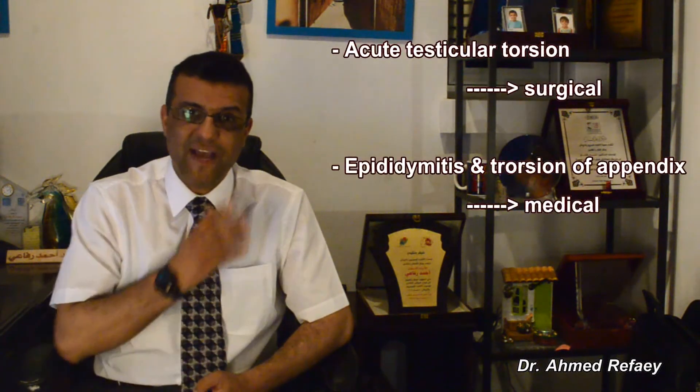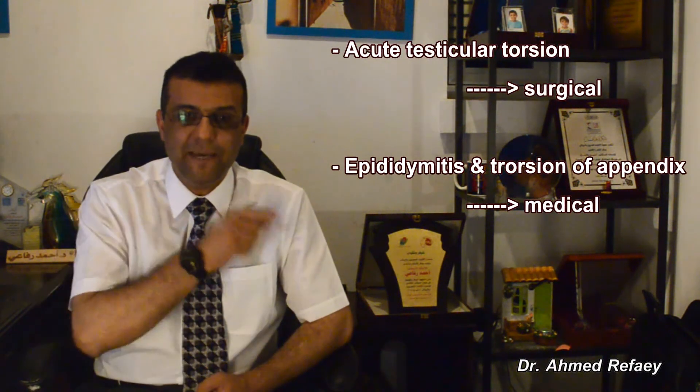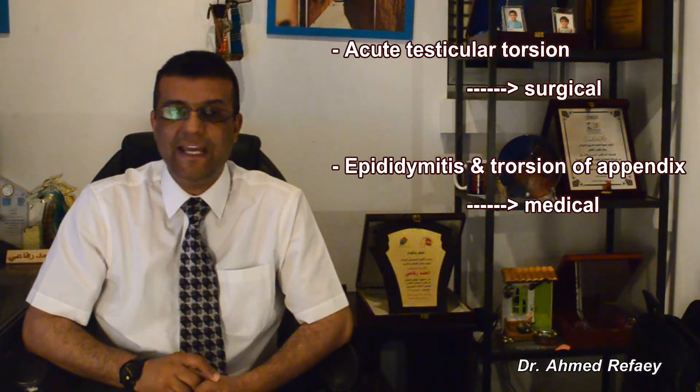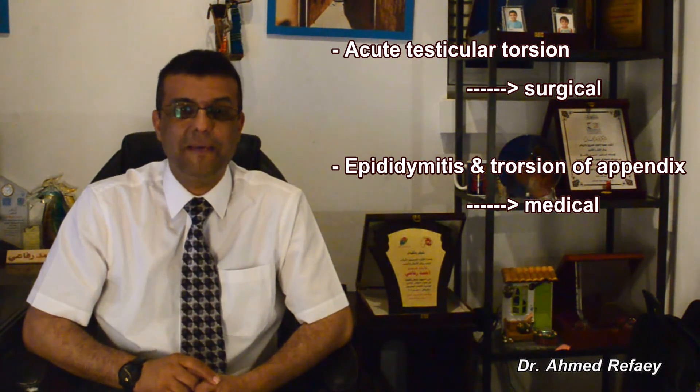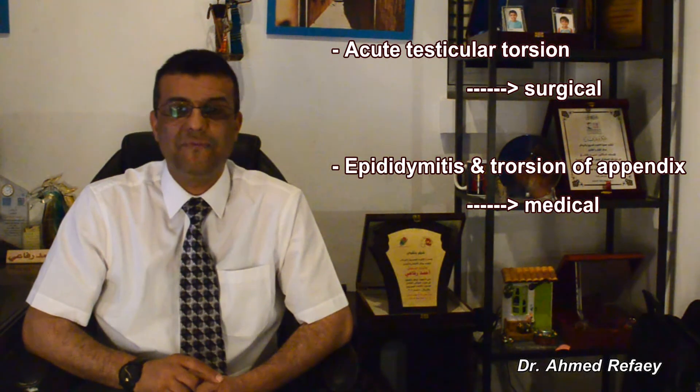Ultrasound differentiation between the three causes of acute scrotal pain is very important because the management is completely different. In cases of acute testicular torsion, management is surgical, while in epididymitis and torsion of the testicular appendix, it is conservative management. To summarize, the three main causes of acute scrotal pain are acute testicular torsion, acute epididymitis, and acute torsion of the appendix of testes.